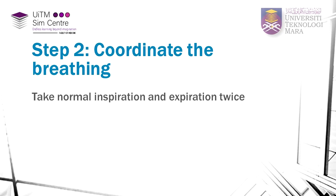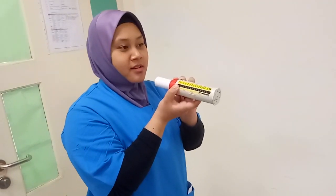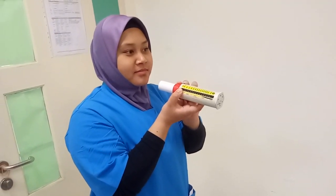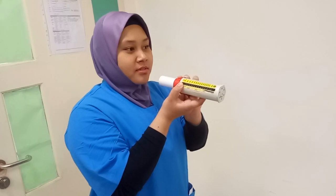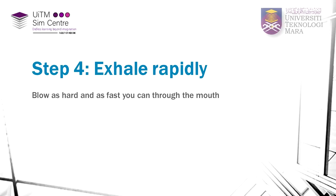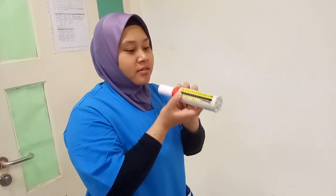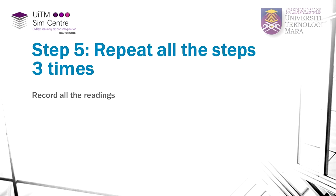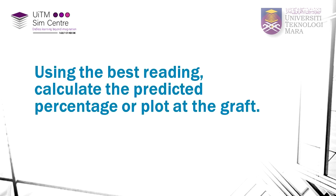Step 1: Subject is standing up or sitting up. Step 2: Coordinate the subject's breathing to take normal inspiration and expiration twice. Step 3: Apply the mouthpiece to the flow meter. Step 4: Take one maximum inspiration, then immediately exhale rapidly through the mouth. Step 5: Repeat all the steps three times. Record all the readings measured, and using the best reading, calculate the predicted percentage or plot on the graph.